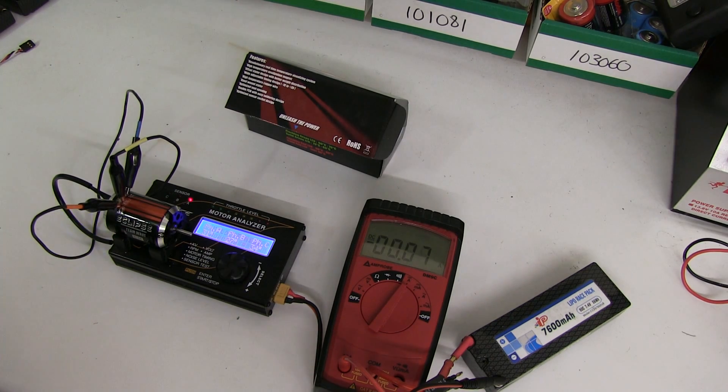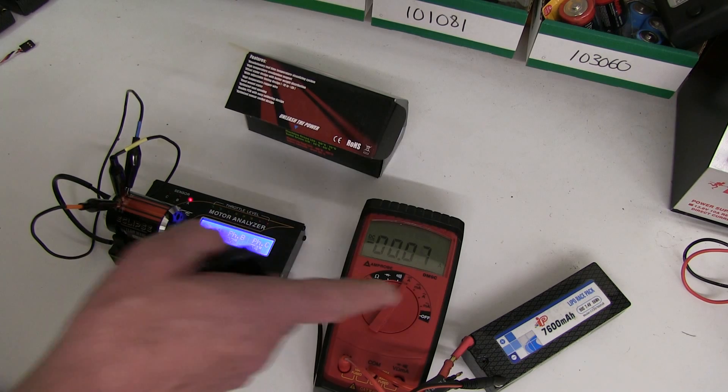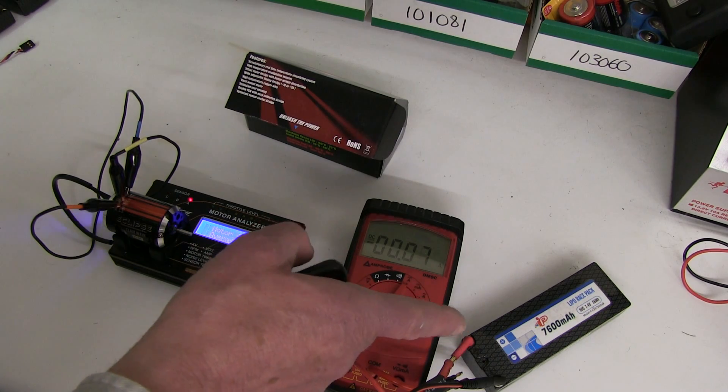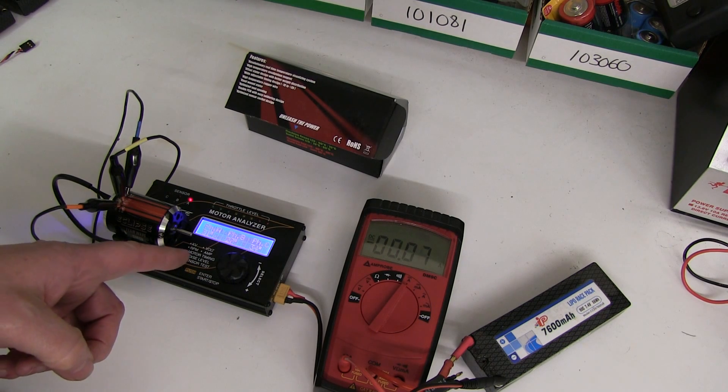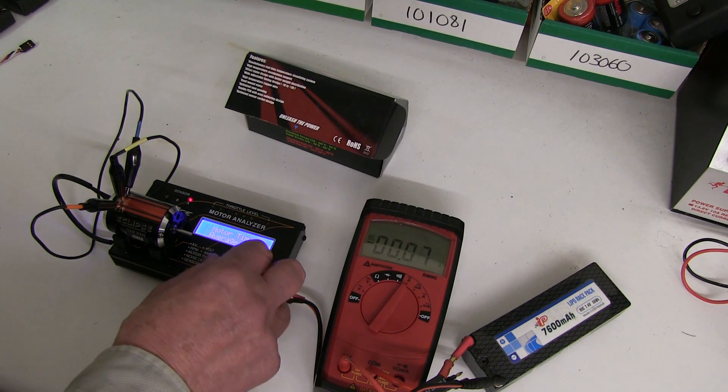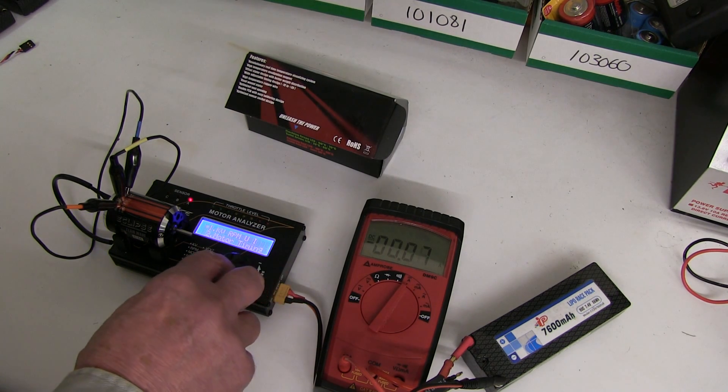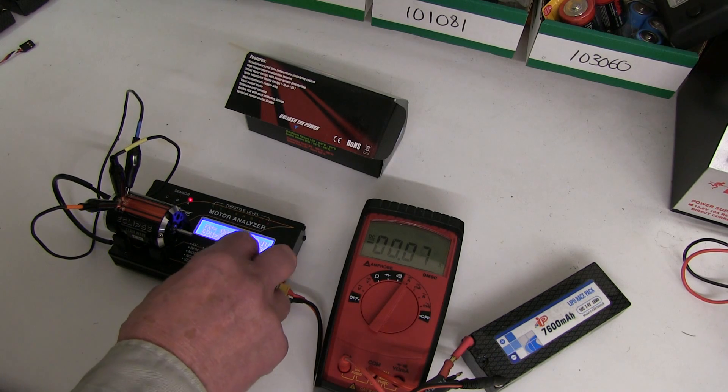Now you do need a battery that has got a reasonable charge in it, not flat, doesn't have to be fully charged, somewhere around 8 volts or just over. First of all I've taken a reading on here, 31 degrees, and then I'll just show you on the ammeter the amp draw.